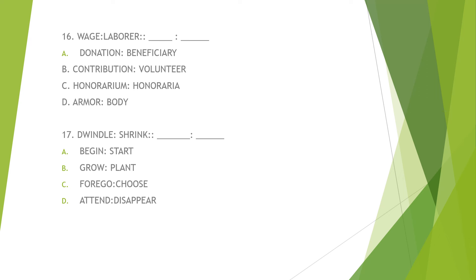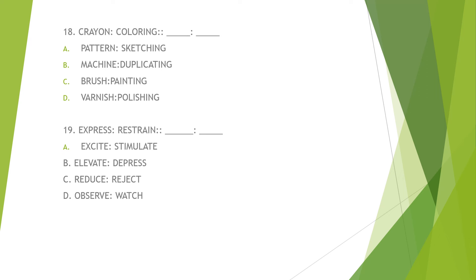Number 17: dwendo is to shrink — where is the similar pair among the options? Number 18: crayon is to color. From the given analogy, what do you think is the answer — A, B, C, or D? Remember, this is the function.